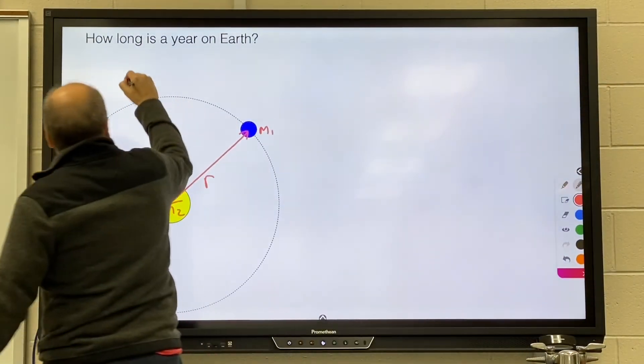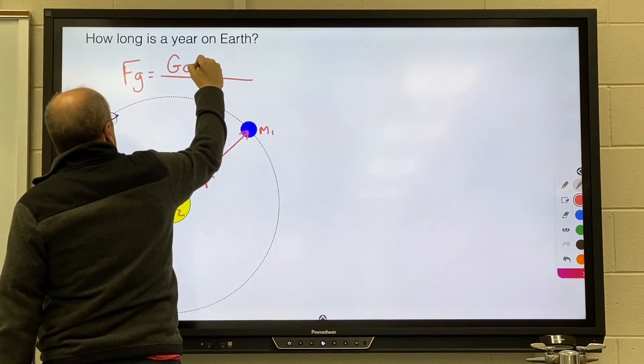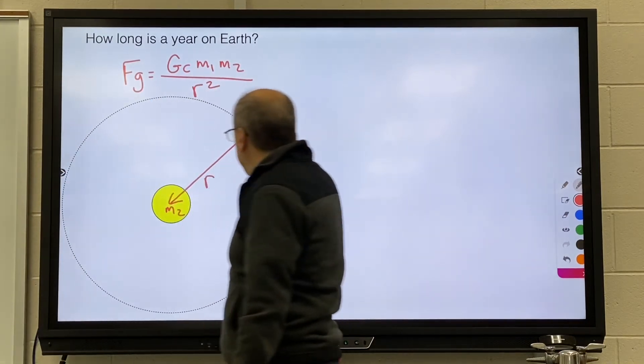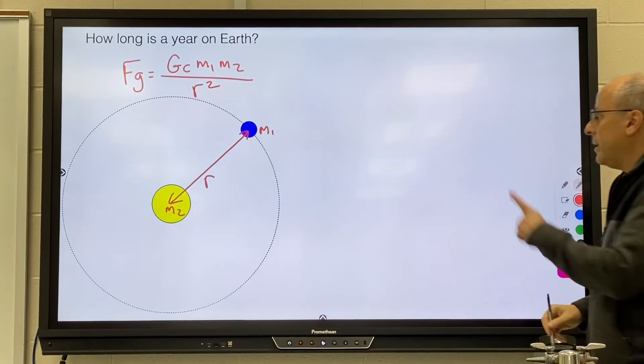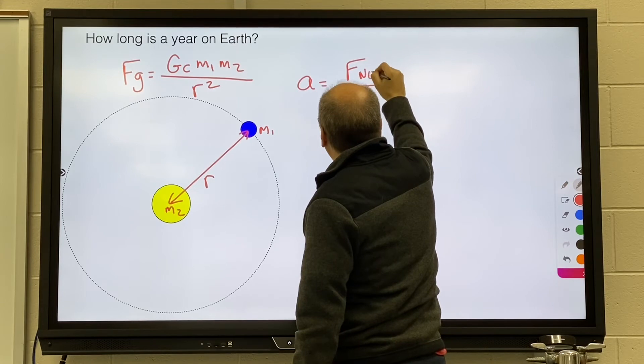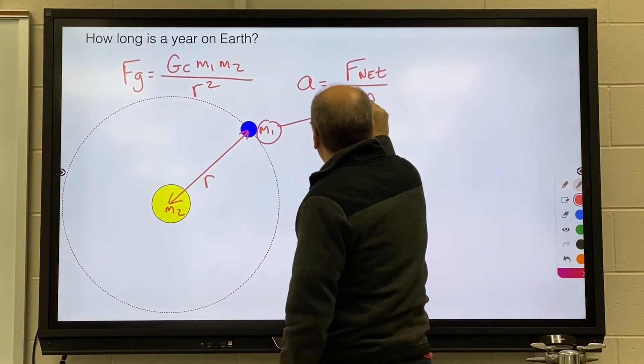So you start by finding the force of gravity. Make sure your distance is the distance from the Earth to the sun. Get your gravity, put it into Newton's equation.